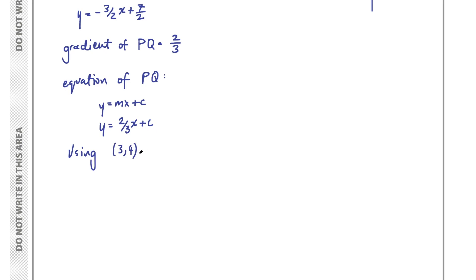Y take y1 equals m multiplied by x take x1. This is the point-slope form. Now we plug in these points for y1 and x1.